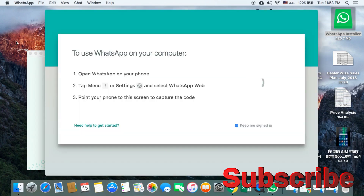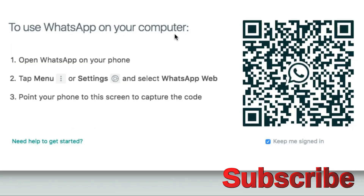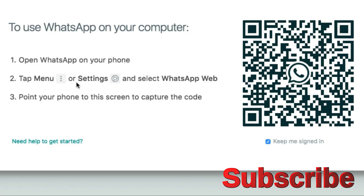To use WhatsApp on your computer, open WhatsApp on your phone. On your phone, go to the menu and tap the menu button.